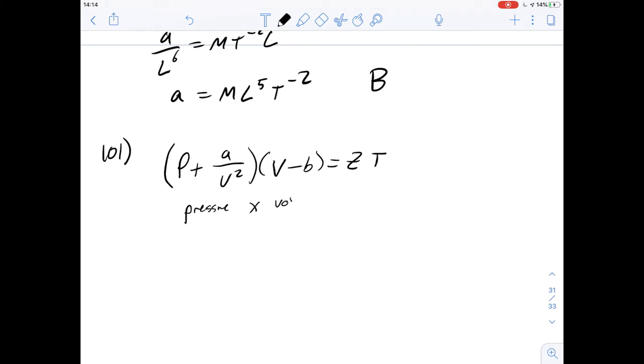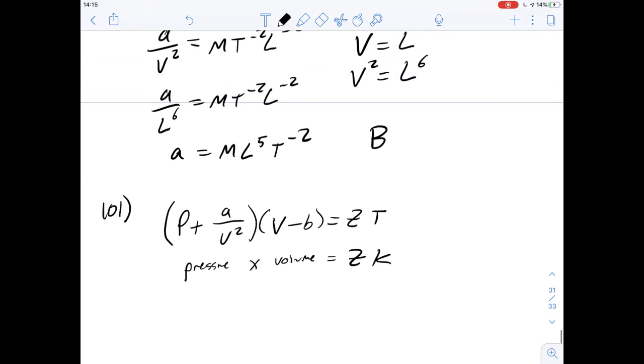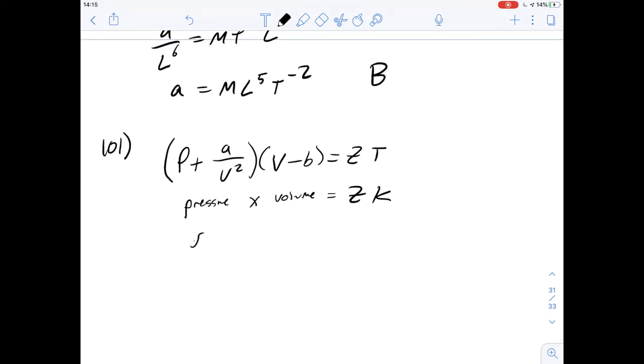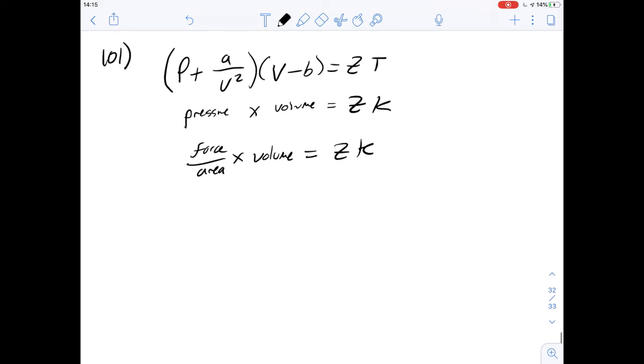The units have to be the same on both sides. And so really we've got pressure here multiplied by volume, and that's going to be multiplied by Z, and then something in temperature would be Kelvin, right? So we've already worked out what our pressure units would be. But let's remember that it's just going to be a force over an area, and we're multiplying that by a volume, and that's going to be equal to Z, and we'll just keep that as K.